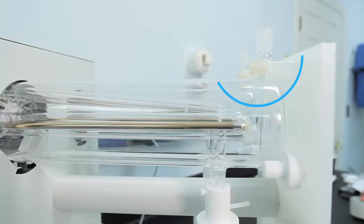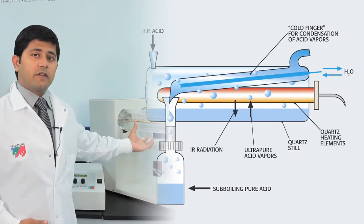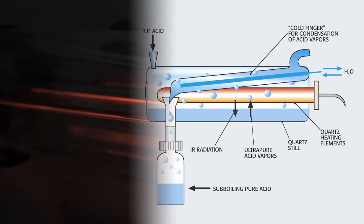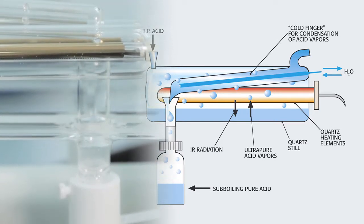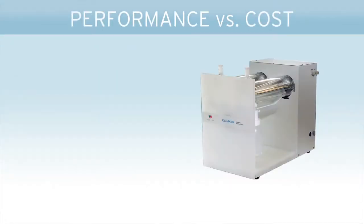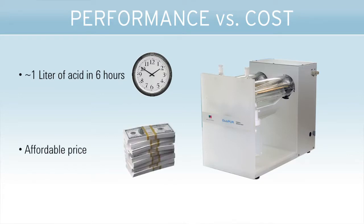The DuoPure has two quartz stills that purify the acid using sub-boiling distillation. The only difference between the SubPure and the DuoPure is that the SubPure has only one quartz still. Reagent grade acid is added here, collected at the bottom of the quartz still, and then heated using an infrared lamp. All the acid vapors from the bottom of the quartz still are collected on a cold finger inside the quartz, and then the purified acid is collected in the PFA bottle here. Because the temperature of the acid never goes above the boiling point, we only get purified acid vapors collected on the cold finger. The DuoPure can produce a liter of high purity acid in about six hours at a price that is affordable for ICP-OES users, and it can also be used for microwave digestion.